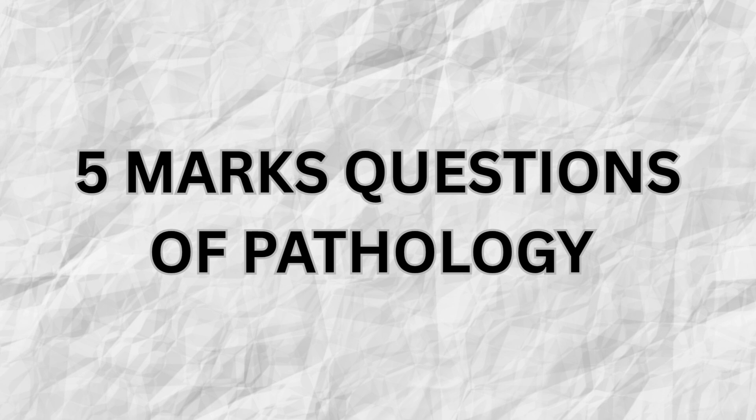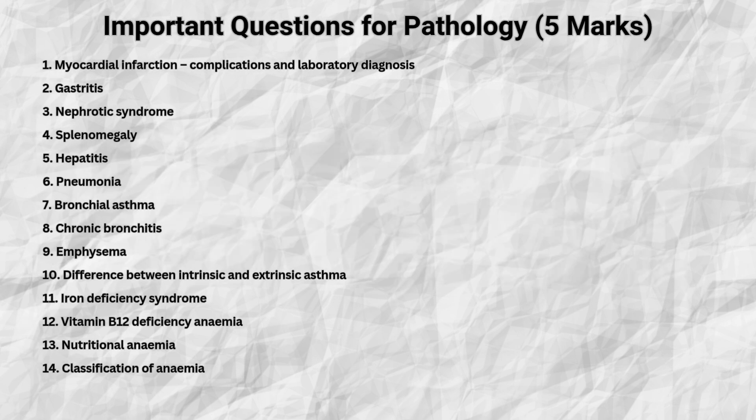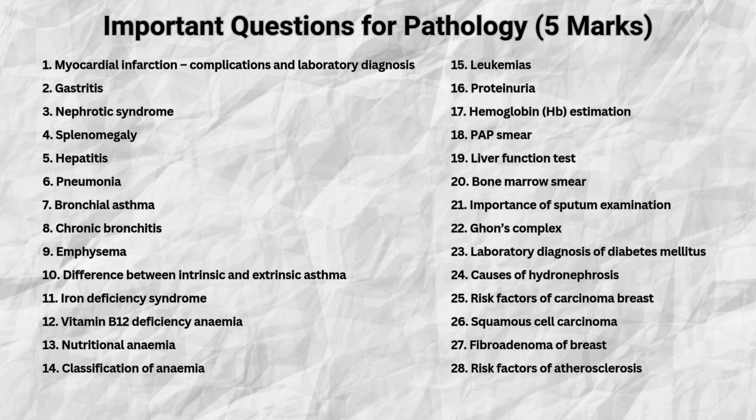Now here's a rapid list of important 5 mark questions you shouldn't miss: myocardial infarction, gastritis, nephrotic syndrome, splenomegaly, hepatitis, pneumonia, bronchial asthma, emphysema and chronic bronchitis. Differences between intrinsic and extrinsic asthma and various forms of anemia including iron deficiency, vitamin B12 deficiency and nutritional anemia. Key topics like leukemias, proteinuria, hemoglobin estimation, PAP smear, bone marrow smear and liver function test.